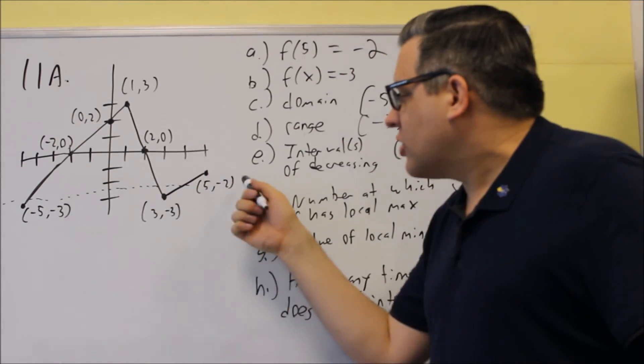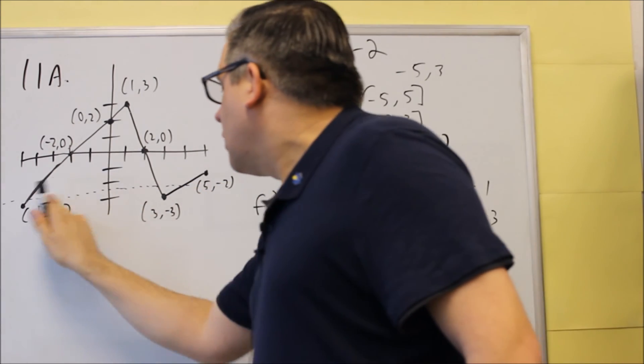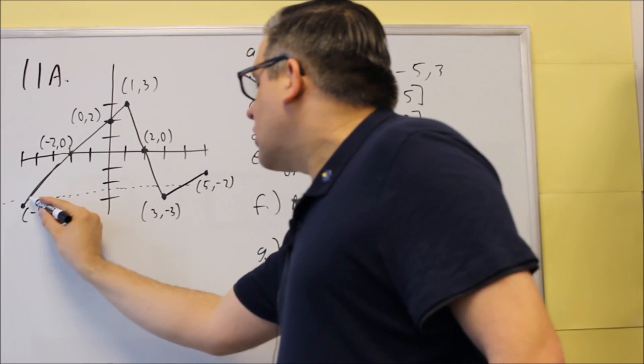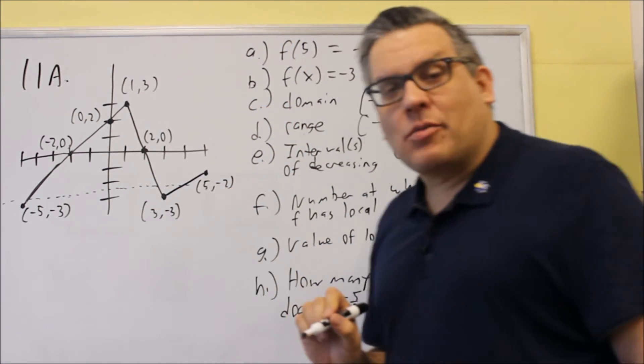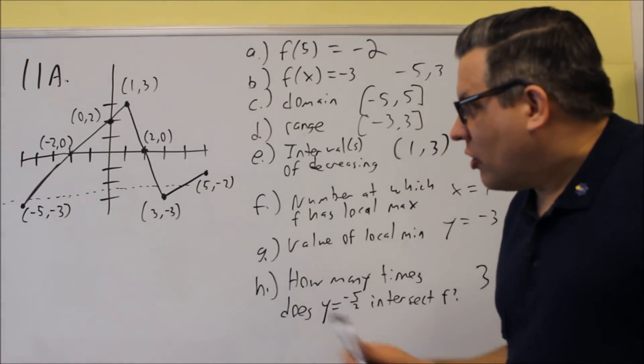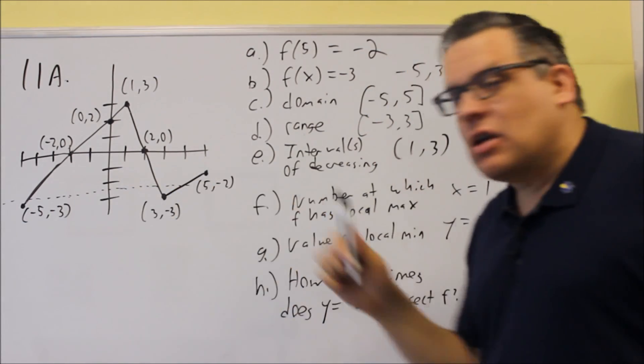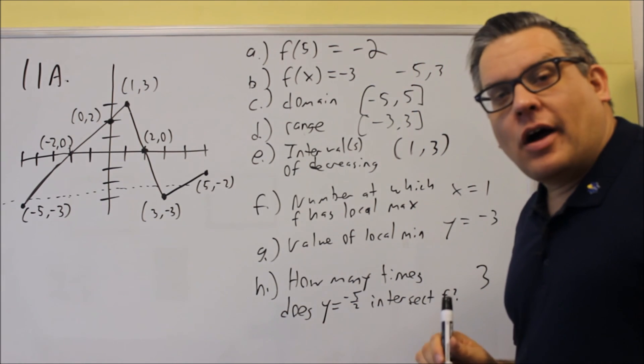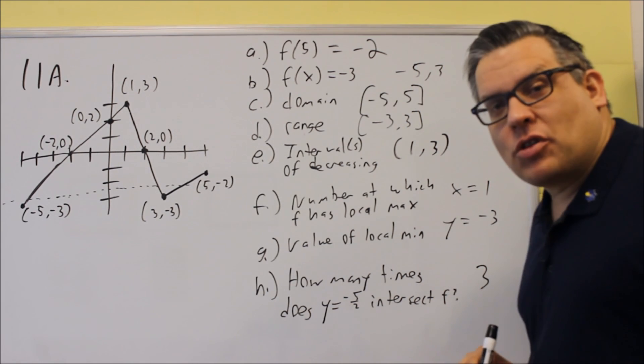So that is going to hit the graph three times. So I would just put 3 for that one. So again, let's look at the horizontal line, see how many times it hits the F of X. And again, that's going to be 3.